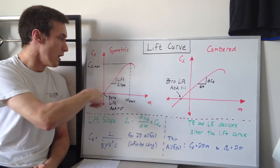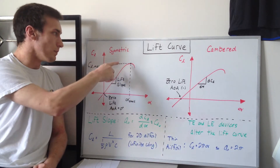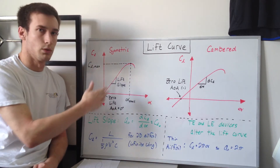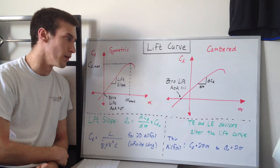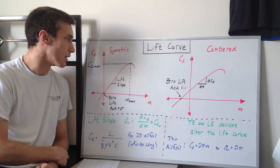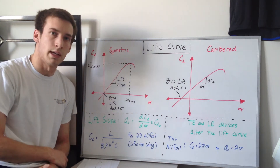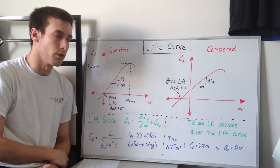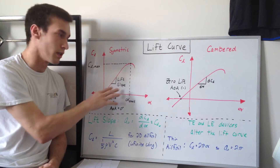Let's say this one here is for a symmetric airfoil — like the NACA 0012, which is symmetric. And the cambered one could be like a NACA 2412. So these curves are specific to specific airfoil sections.